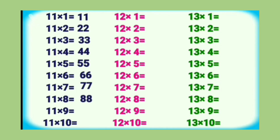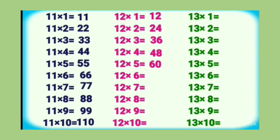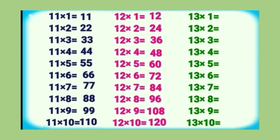11 9's are 99, 11 10's are 110. Table of 12: 12 1's are 12, 12 2's are 24, 12 3's are 36, 12 4's are 48, 12 5's are 60, 12 6's are 72, 12 7's are 84, 12 8's are 96, 12 9's are 108, 12 10's are 120.